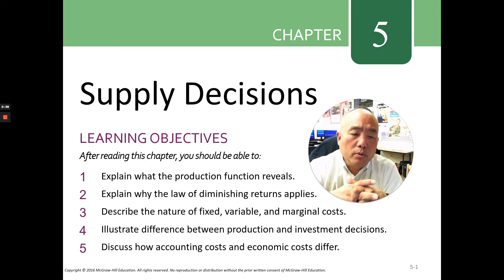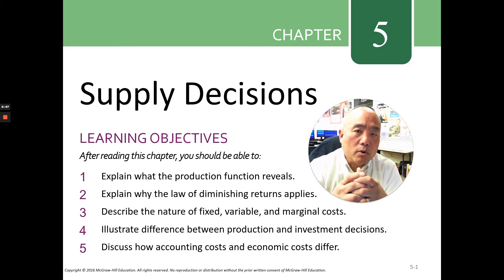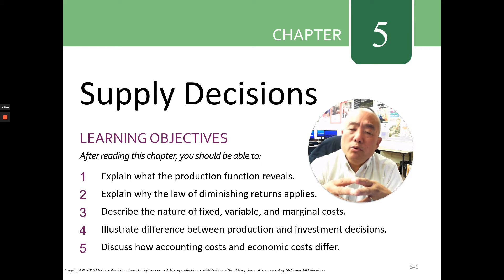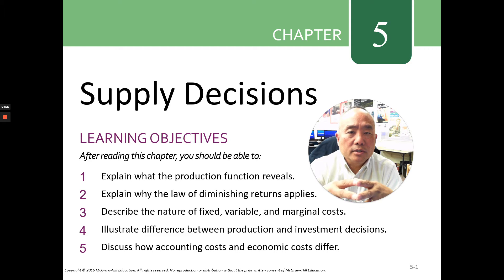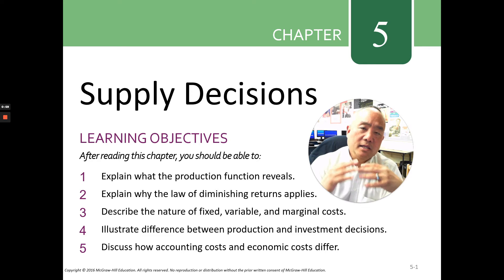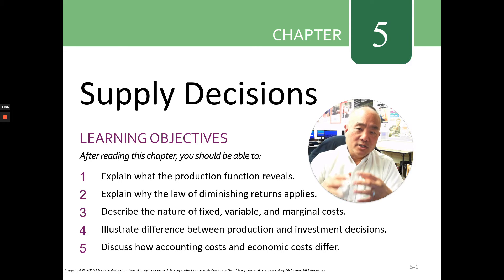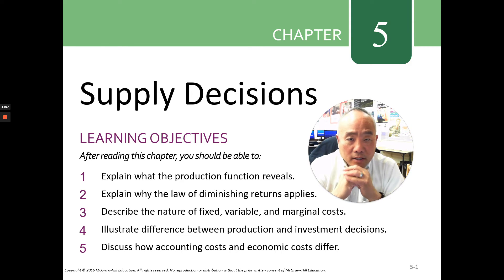Number two, explain why the law of diminishing returns applies. Given a fixed amount of input or resources, at a certain point in time, you will begin to notice diminishing returns. In other words, you can only produce so much given these fixed inputs before quantity and quality start to diminish.